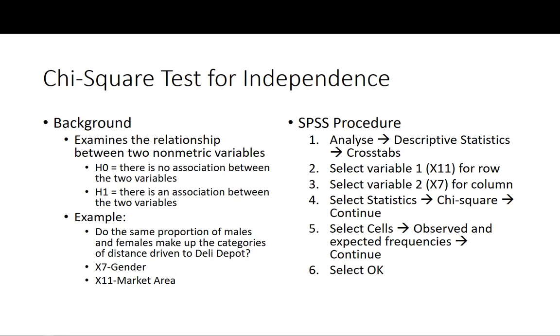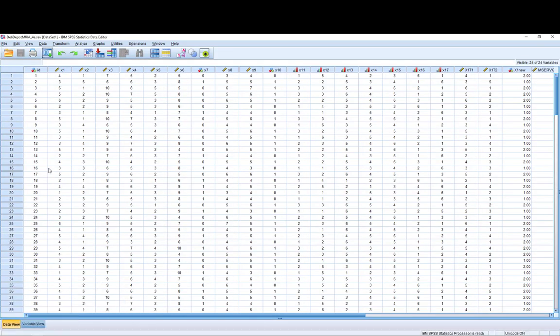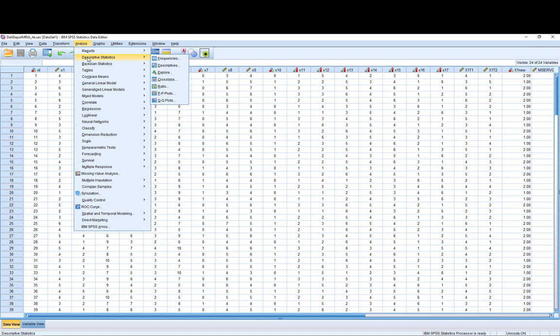The procedure is shown here on the right. I will go to SPSS and the procedure for a chi-square is very similar to a crosstab but there are some key differences here. We need to go to Analyze, Descriptive Statistics and Crosstabs.